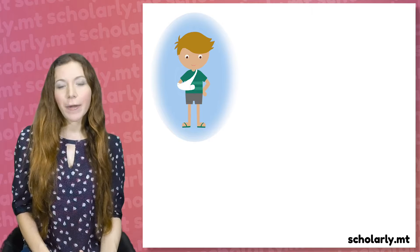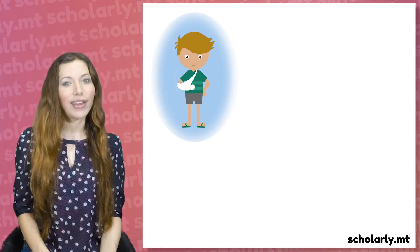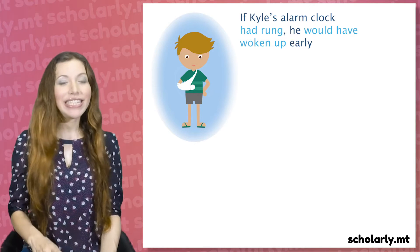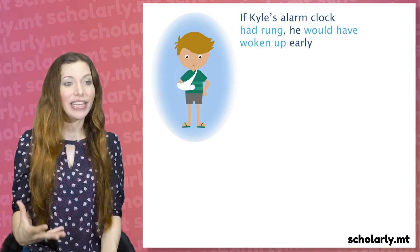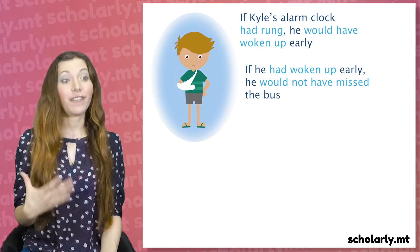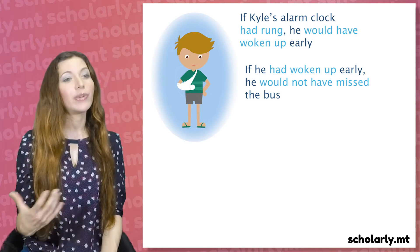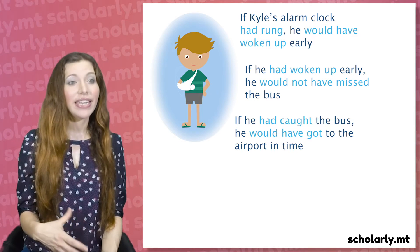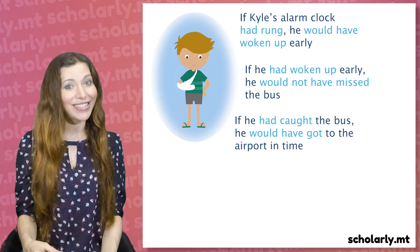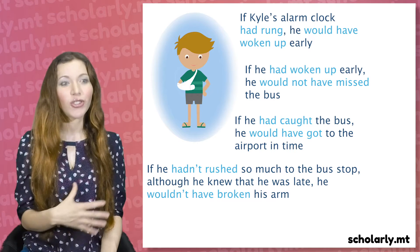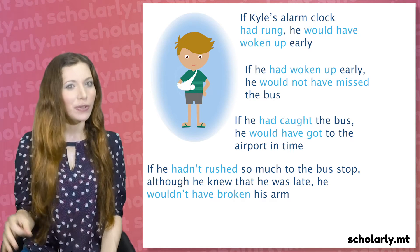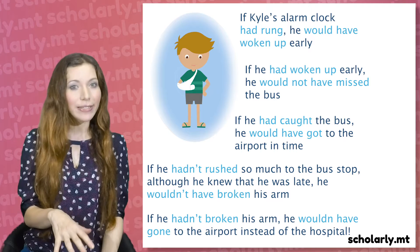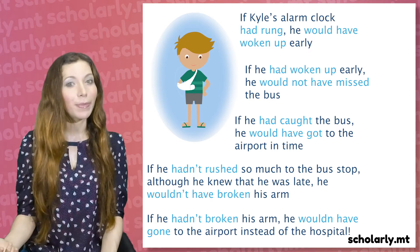This is Kyle and we're going to talk about what happened to Kyle yesterday using the third conditional. If Kyle's alarm clock had rung, he would have woken up early. If he had woken up early, he would not have missed the bus. If he had caught the bus, he would have got to the airport in time. If he hadn't rushed so much to the bus stop, although he knew that he was late, he wouldn't have broken his arm. If he hadn't broken his arm, he would have gone to the airport instead of hospital.